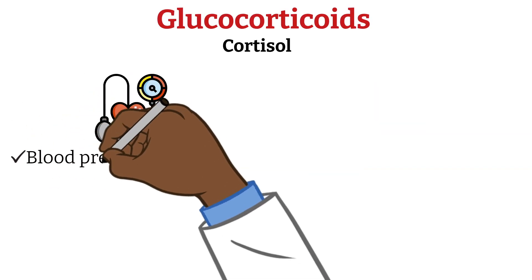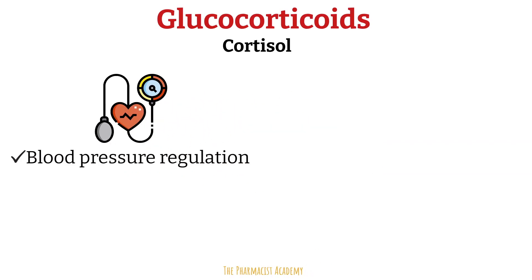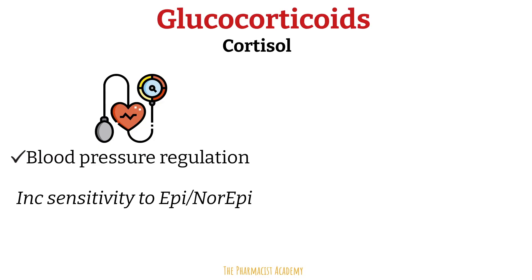Cortisol plays a significant role in regulating blood pressure as part of the fight-or-flight response. It increases the body's sensitivity to vasoconstrictor hormones like norepinephrine and angiotensin 2, making blood vessels more responsive to these substances, leading to increased constriction and higher blood pressure. Cortisol can also increase cardiac output, which can further raise blood pressure.